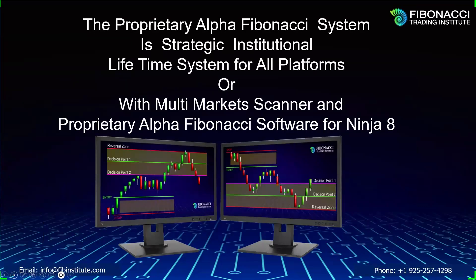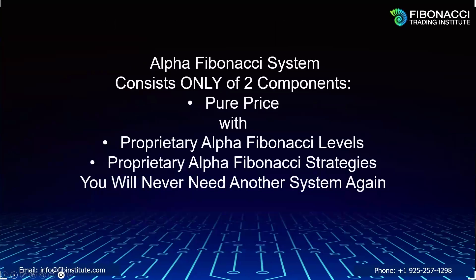The proprietary Alpha Fibonacci system is a strategic institutional lifetime system for all platforms, with a multi-market scanner and proprietary Alpha Fibonacci software for NinjaTrader 8, based on pure price. You make a personal decision about what instrument, what time frame, and what platform you want to trade. The system consists of only two components: pure price and proprietary Alpha Fibonacci levels. With these levels and strategies, you will never need another system again.